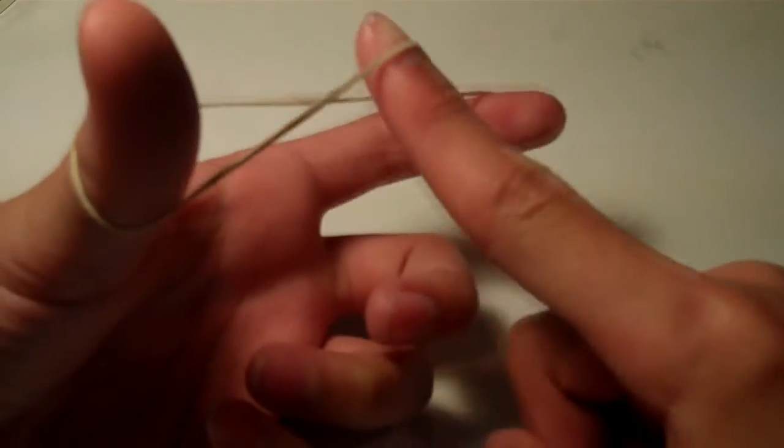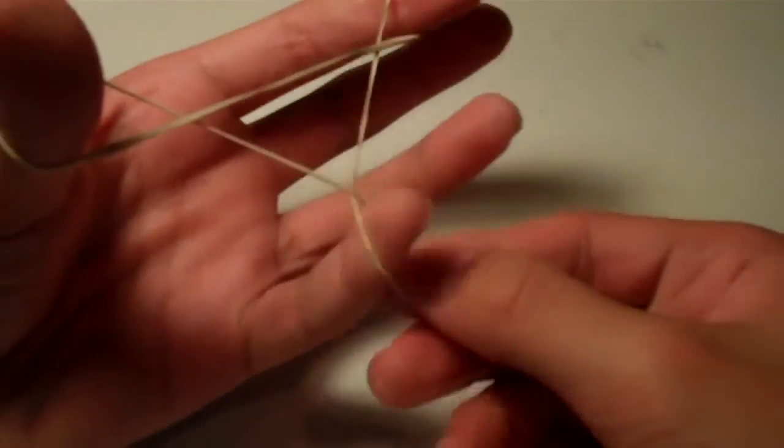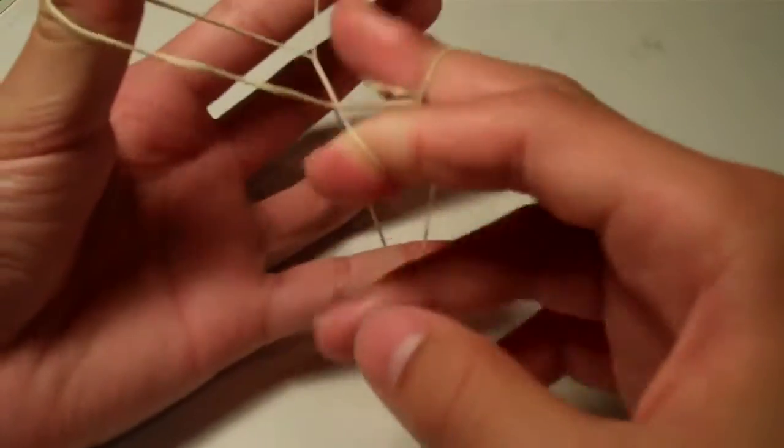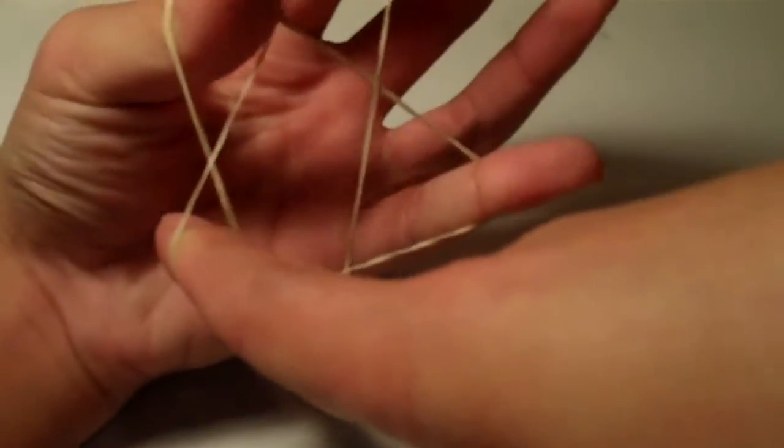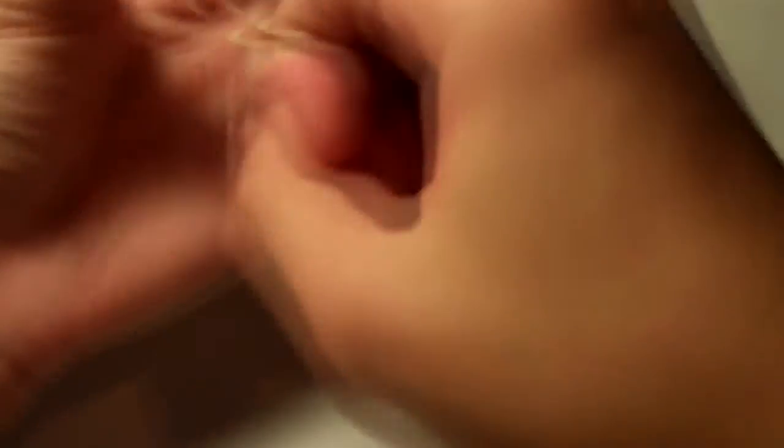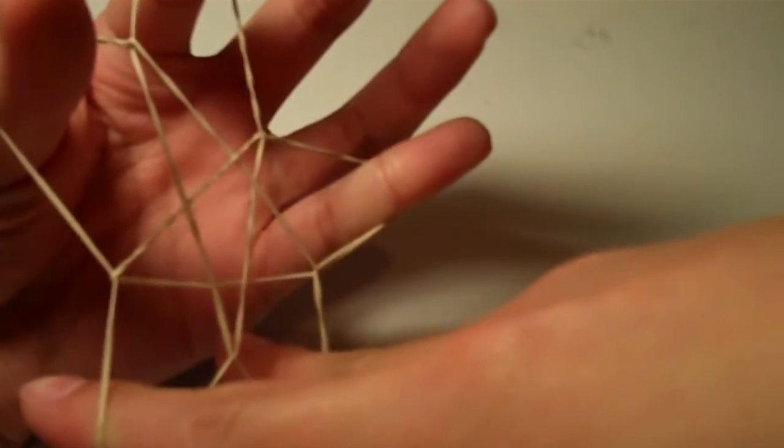So you have the rubber band around the index and the thumb. You go under, over, twist onto the pinky, bring it over. You got your star. Yay. And then, I'll take this. Now we have the double star.